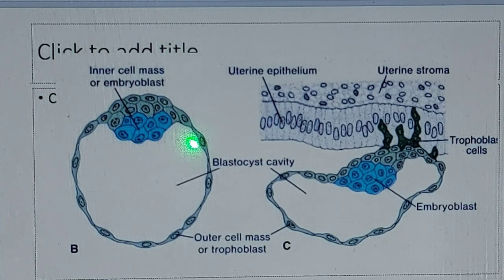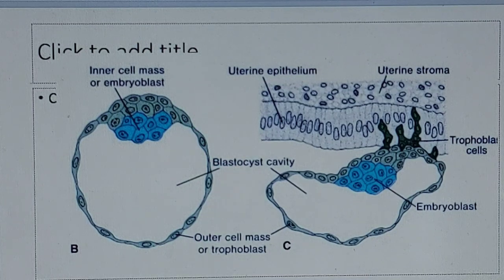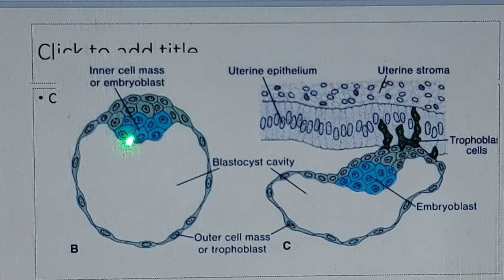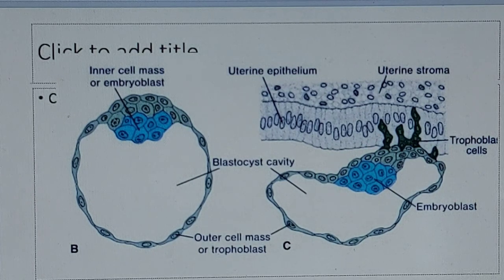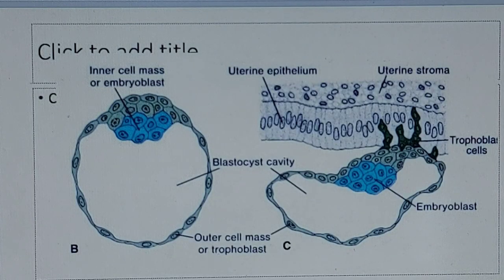For the description purpose, this inner cell mass is known as the embryoblast, and the outer cell mass is known as the trophoblast. 'Tropho' means nutrition. In the future, the embryoblast will form the embryo, and the cells outside the embryo — the trophoblast — will give nutrition to this embryo. This is the development of the first week.